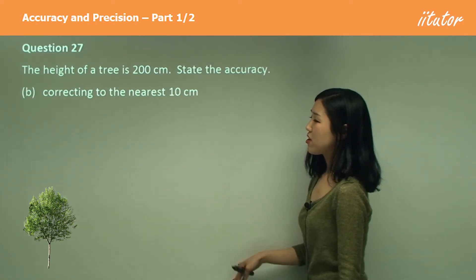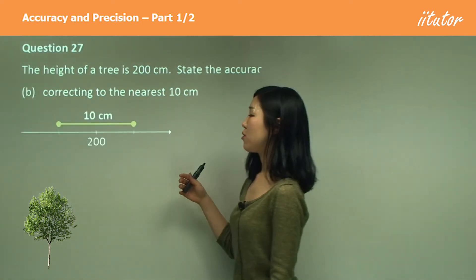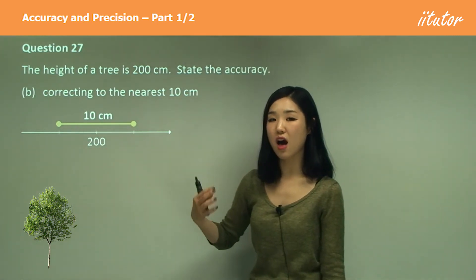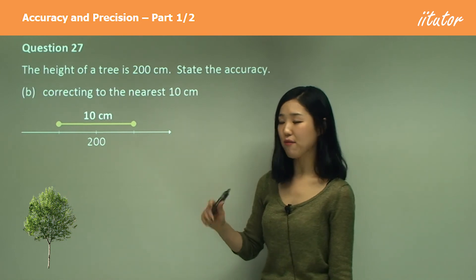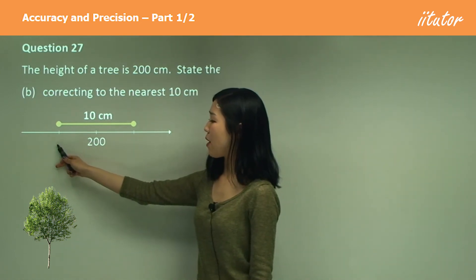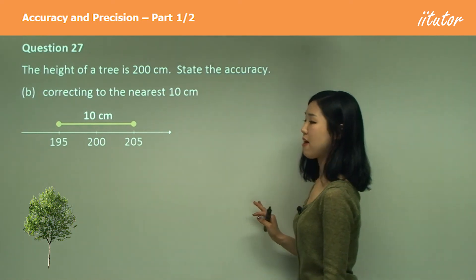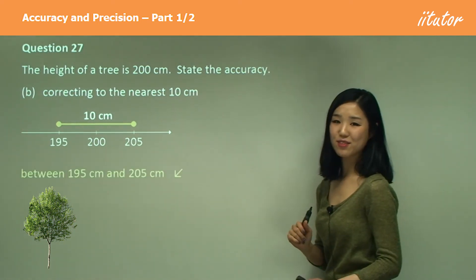This time they want you to correct to the nearest 10. So what I mean is I want this gap to be 10 centimeters. And what's half of 10? It's 5. So we subtract 5 to get that one and add 5 to get that one. So it's going to be 195 and 205, which are the accuracy levels.